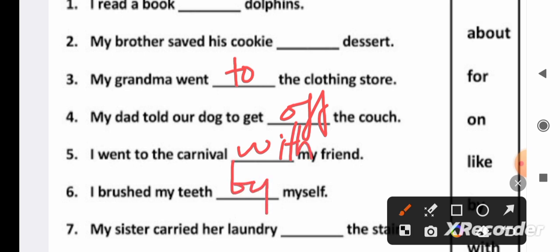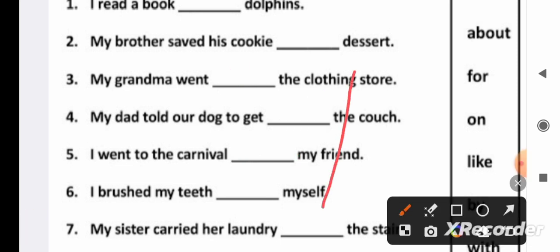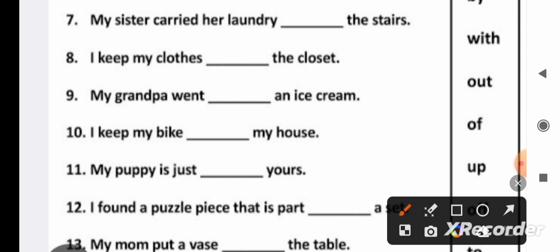I went to the carnival with my friend. I brushed my teeth by myself. So we completed six sentences. Now see the seventh: my sister carried her laundry up the stairs. I keep my clothes number eight in the closet. My grandpa went for an ice cream, it will be for. In nine, I keep my bike at my house.